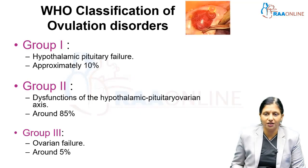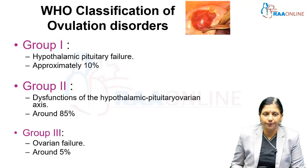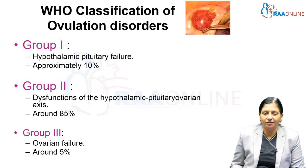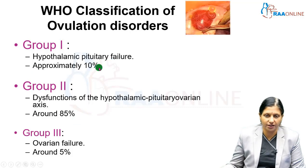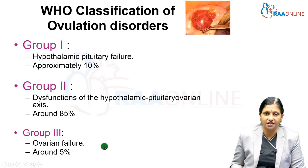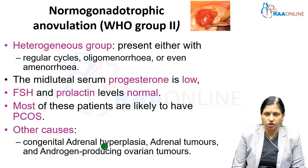Classification of ovulation disorders includes: Group 1 — hypothalamic pituitary failure, approximately 10%; Group 2 — dysfunction of the hypothalamic pituitary ovarian axis, around 85%; and Group 3 — ovarian failure, around 5%. The maximum group of patients lies in Group 2, including PCOS patients, at 85%. The next most common is the hypogonadotropic hypogonadism patient at 10%, and the least common is ovarian failure at 5%.